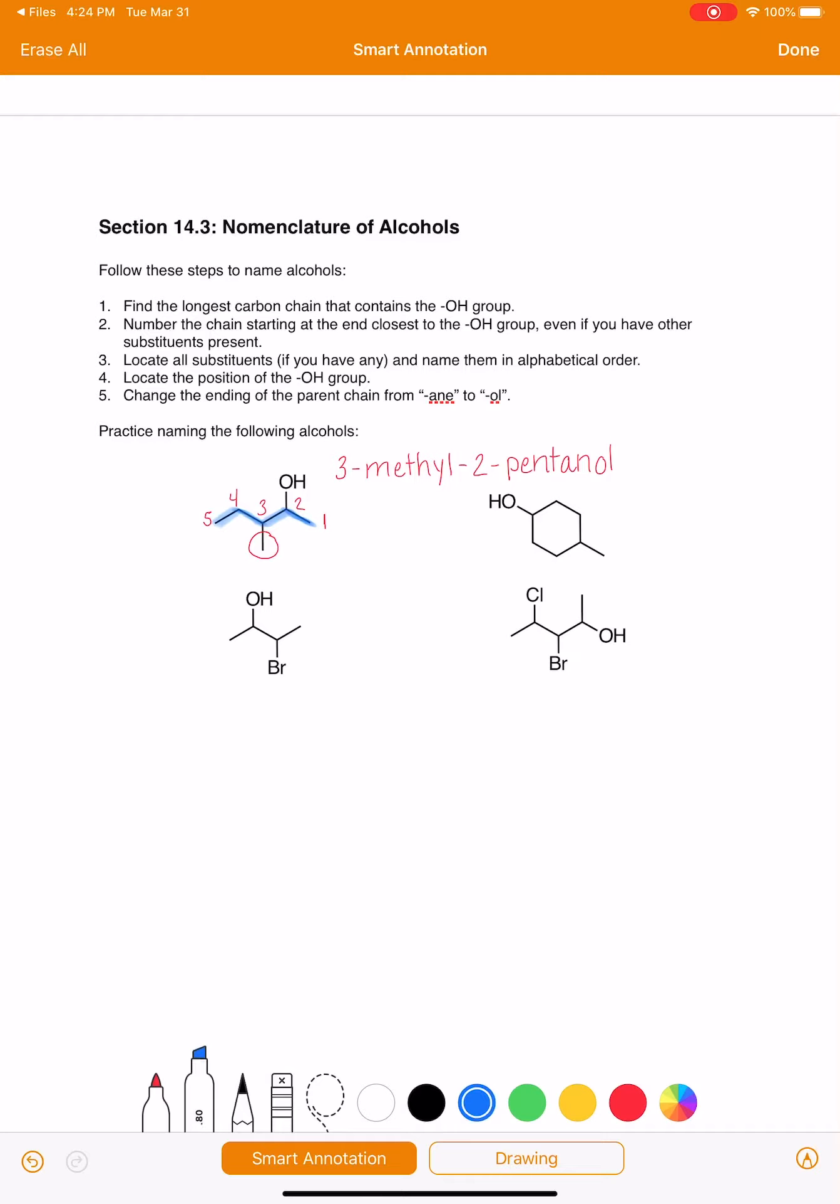Let's look at the one underneath it. We're finding the longest continuous chain of carbons. We start numbering at the end closest to the OH, so that's going to be the left side. We number across from left to right.